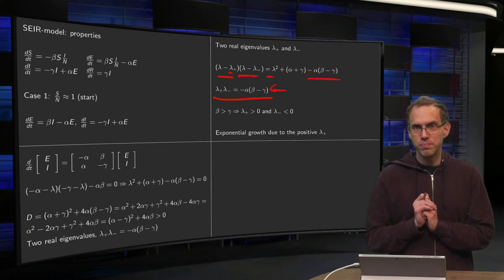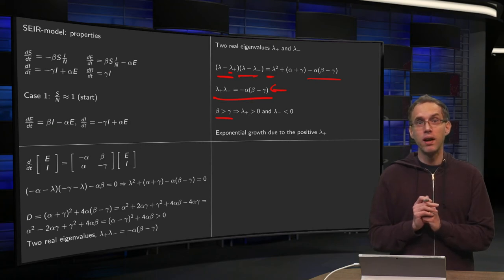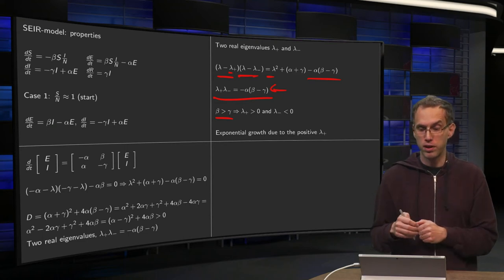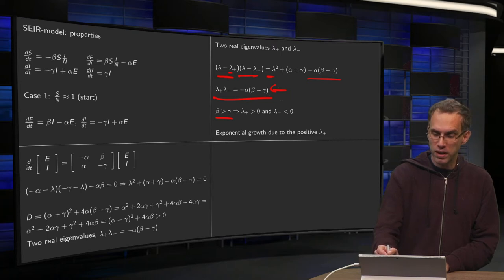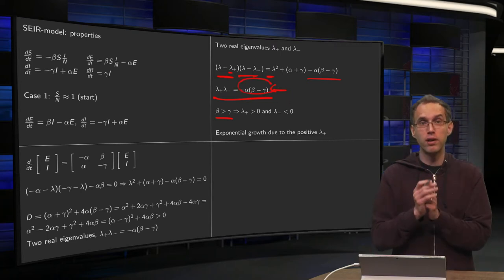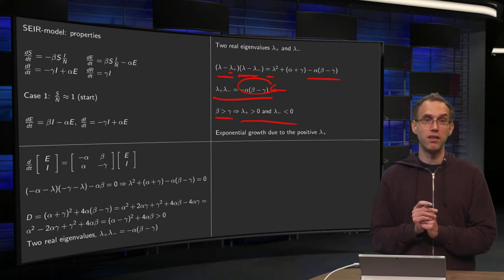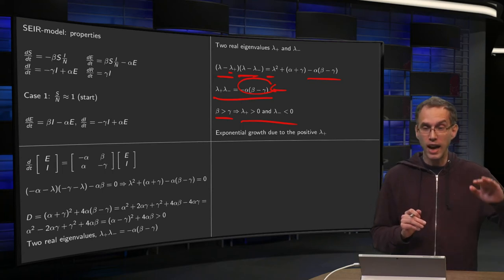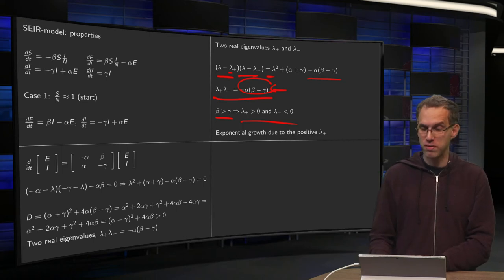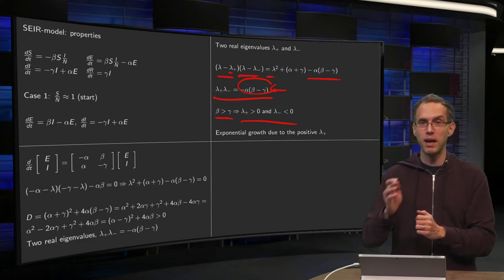Now, why is this important? Well, our beta will be bigger than gamma. So that means that we will have a larger spread. So the epidemic is spreading faster than that people are recovering. So if beta is bigger than gamma, alpha is of course positive, all parameters are positive. Then this quantity over here is negative. So if the product lambda plus times lambda minus is negative, that means that eigenvalues have a different sign, which means that your biggest eigenvalue lambda plus has to be positive and lambda minus is negative. So in this case, you will start with an exponential growth due to your positive eigenvalue lambda plus. See how important your beta is already here. As long as your beta is bigger than gamma, you get this exponential growth.